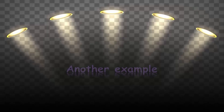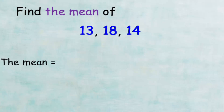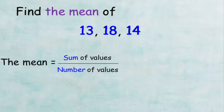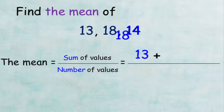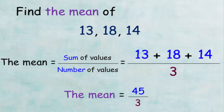Let's take another example. We want to calculate the arithmetic mean of the values 13, 18, and 14. We write the law: sum of values divided by the number of values. The sum is 13 + 18 + 14, divided by 3. So the arithmetic mean is 45 over 3, which equals 15.